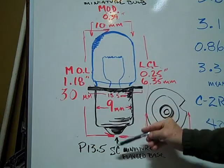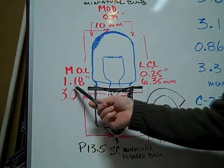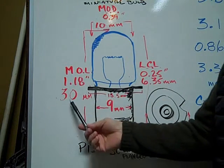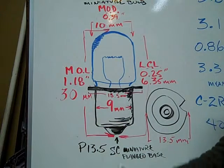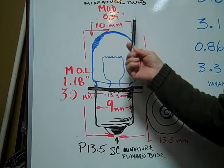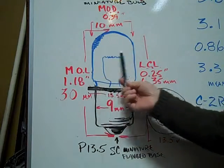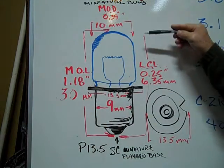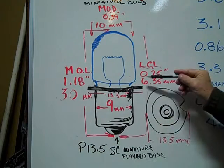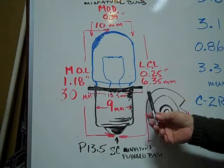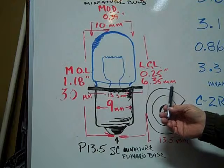The maximum overall length is 1.18 inches or 30 millimeters. The maximum outer diameter is 0.39 inches or 10 millimeters. The light center length is 0.25 inches or 6.35 millimeters.